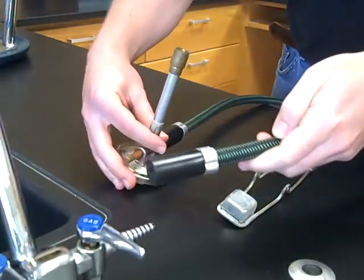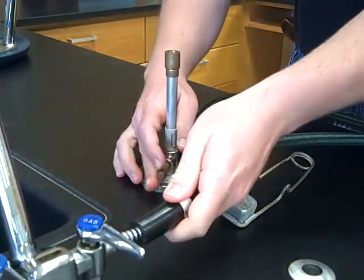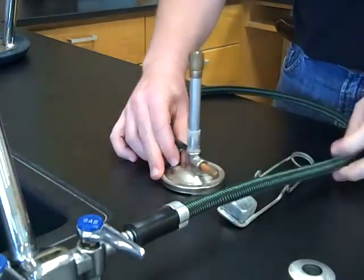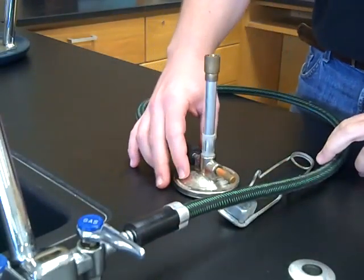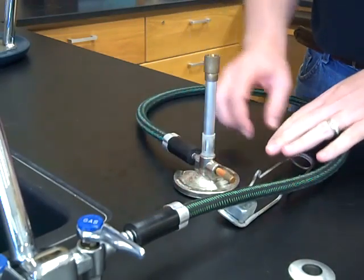The other end of the gas tubing needs to be connected to the gas jet. And then you want to make sure that your Bunsen burner is sitting flat.